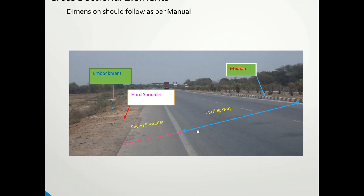Cross sectional elements include median, carriageway, paved shoulder, hard shoulder, earthen shoulder, embankment, and toe line. All these values should be as per the manual. Tapers must also be as per the manual — do not take independent decisions as the independent engineer will comment. Follow the standards and prepare the line model templates accordingly. Tapers for median are typically 1 in 50, and for carriageway 1 in 25 or 1 in 30 — discuss these with your manager.